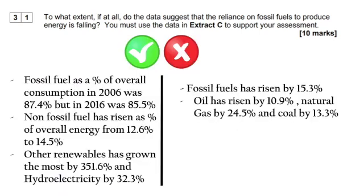When structuring how to use this data, a quick plan could be: for the argument that fossil fuels are falling, we can show world fossil fuels as a percentage of overall consumption have fallen, non-fossil fuels have risen, and other renewables have grown the most. But to argue against that, fossil fuels have actually still risen in absolute terms — oil by 10.9%, natural gas by 24.5%, and coal by 13.3% — so every single fossil fuel has also risen.